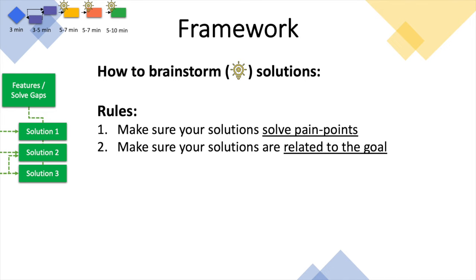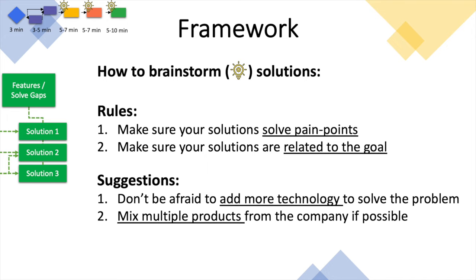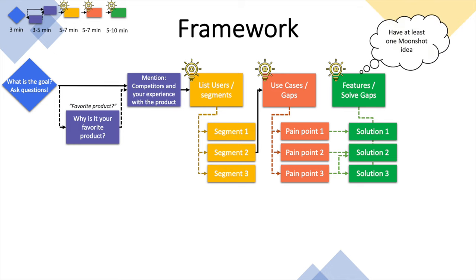Here are three suggestions for coming up with solutions. Number one: don't hold back on adding more technology. Whether improving shoes or a mobile app, don't be afraid to suggest new technologies — don't limit yourself to what already exists in the product. Number two: don't be afraid to mix multiple products from the same company. For example, if improving PowerPoint, HoloLens can be part of a solution, as long as it makes sense and solves the pain point. Number three: let your imagination run wild and have a moonshot idea. Think: if you had a magic wand, how would you solve the problem? Just make sure your ideas follow rules one and two. Companies like Google love hearing moonshot ideas.